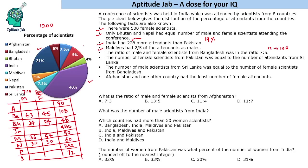The number of female scientists from Pakistan was equal to the number of attendants from Sri Lanka, which is 72. So Pakistan has 72 female and 180 male scientists. The number of male scientists from Sri Lanka was equal to the number of female scientists from Bangladesh, which is 45. So Sri Lanka has 45 male and 27 female scientists.